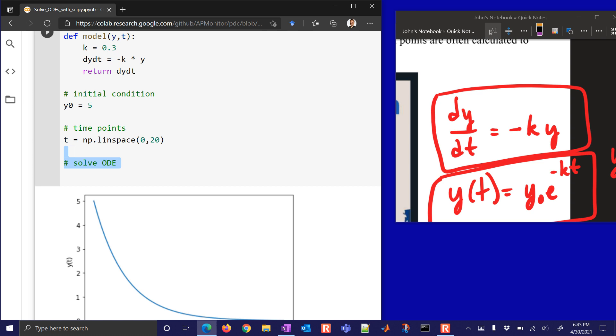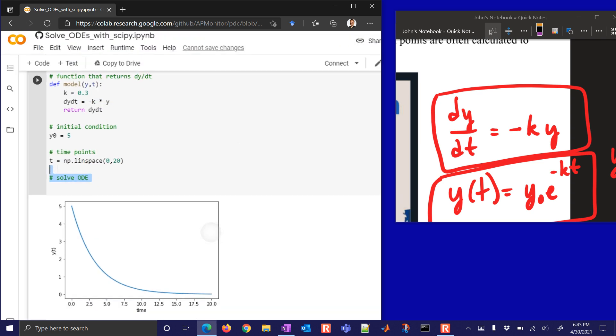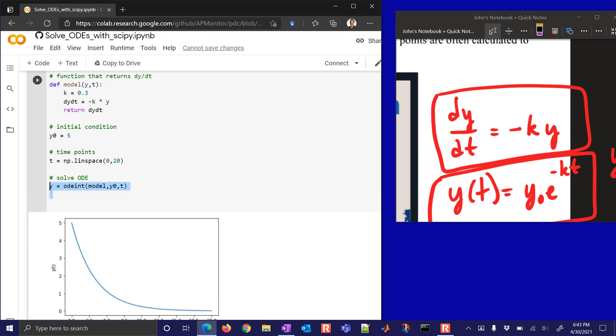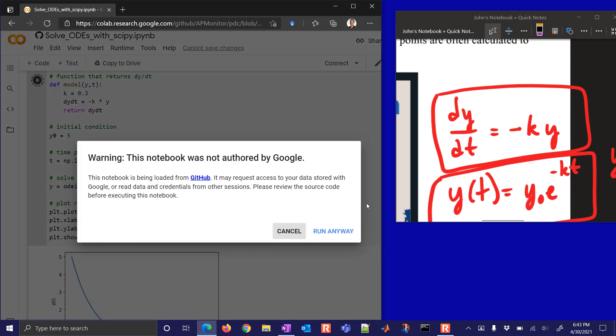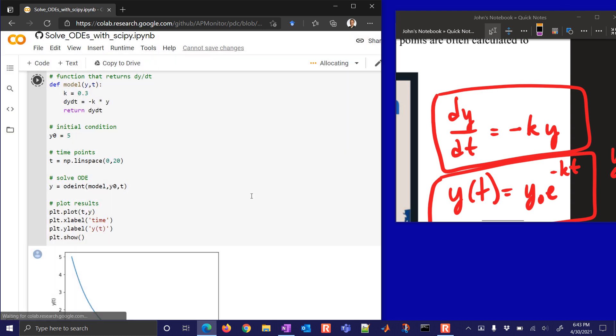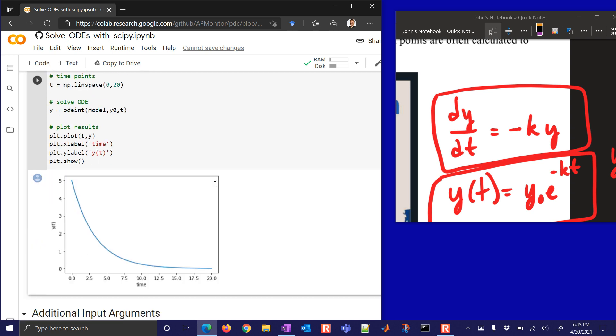Now we want to solve with the ODE solver. And so that's going to be our odeint. And we have our model, this function, the initial condition y0, and then the time points. And then we want to plot the results. So if we run this, and click run anyway, then it's going to evaluate this, and then return this plot. So you can see it starts at 5, and then has an exponential decay down to 0.